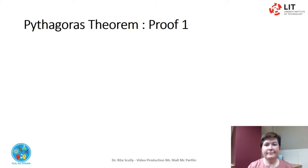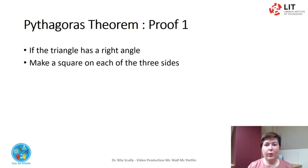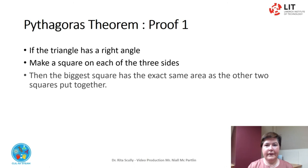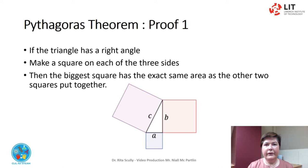Proof 1. If a triangle has a right angle and you make a square on each of the three sides, then the biggest square has the exact same area as the other two squares put together. So the square of A, A squared, plus the square of B, B squared, equals the square of C, C squared.